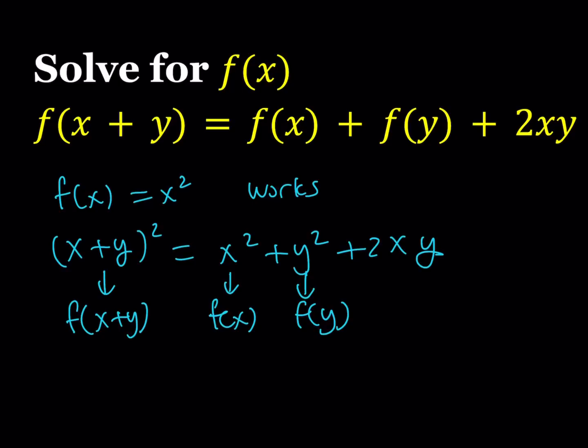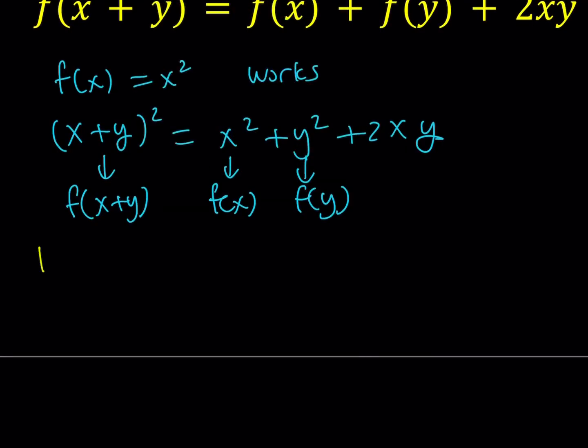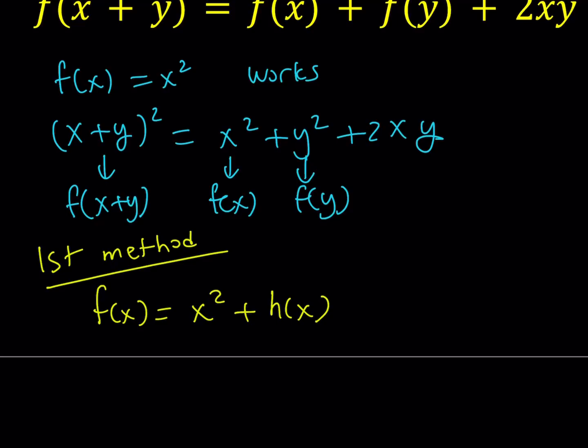Well, I'll be presenting two methods here. So here's the first method. Our first method involves using f of x equals x squared as a base. So we know that f of x equals x squared is a solution. But can we find another function such that f of x can be written as x squared plus h of x? And if h of x is equal to zero, obviously, we get the trivial solution, which is f of x equals x squared. But my question is, can we find a non-zero function h of x such that when I add it to x squared, it becomes a solution as well?